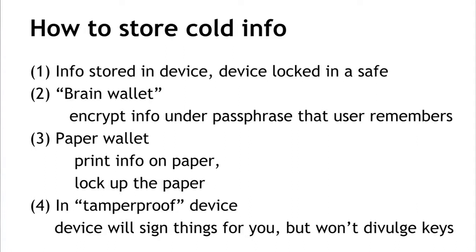With that in place, we can talk about the different ways cold information can be stored. The first way is to store the information on some kind of device — a laptop, a mobile phone or tablet, or a thumb drive — and put that device in a safe. We store the information on that device, turn the device off, and lock it up. If somebody wants to steal it, they have to get into our locked storage.